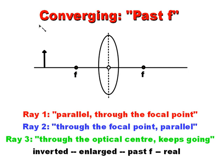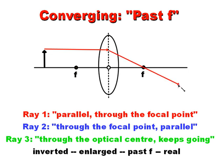The light is going to come together on the opposite side of the lens. In the first scenario, the object — in this case an arrow — is past F, which means it's to the left of the focal point. We only need three rays to ever get one of these images. The first ray always goes parallel, it hits the lens, and then it's going to go through the focal point on the other side.